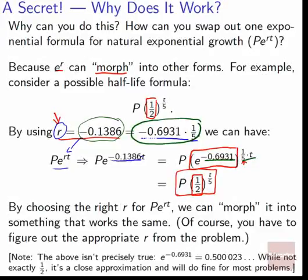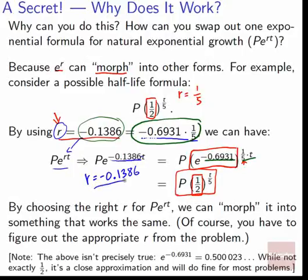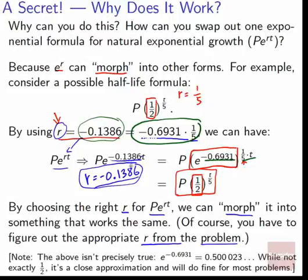Notice that the r in the half-life formula equals one-fifth, while the r in PERT equals the very different negative 0.1386. By choosing r carefully and having enough information from the problem, you can sometimes forget the special formula and just use PERT instead. Of course, you have to be able to figure out the appropriate r for PERT from the problem. The r for PERT is probably going to be totally different than the r for the specialized formula, but if you can get it from the problem, you can use PERT.